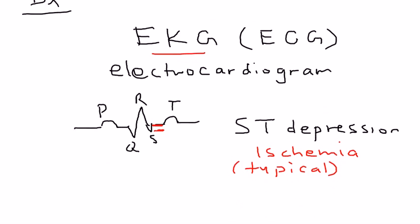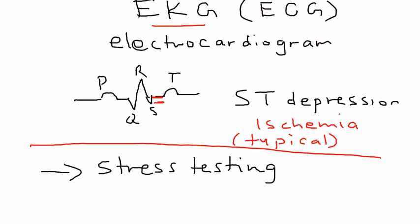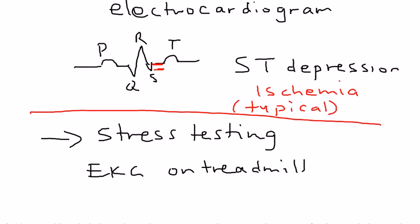The next test is a very important one called stress testing. It's simply an EKG done while the person is exercising on a treadmill. The person is walking on a treadmill and you're doing an EKG — the same test, but performed during exercise. This gives you more information about the patient's level of ischemia. It is a very specific and sensitive test.